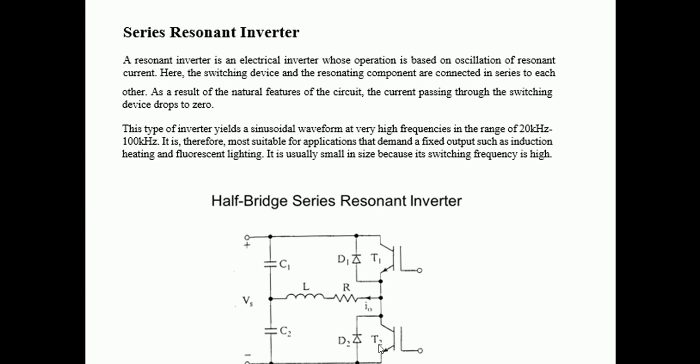Similarly, when the switch T2 is switched on, the series resonant circuit on the lower side is formed and we get the maximum power on the lower side. This is how the series resonant inverter works.